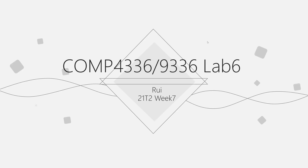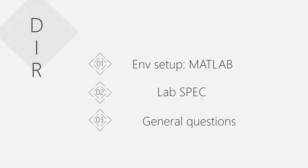Let's have a look at Lab 6. Lab 6 is a little bit different — we are going to use MATLAB. In the first step I will talk about how to do the installation for MATLAB and the Communication Toolbox that we need in the lab. In the second step, just like the previous lab, we will discuss the details about the lab, how to do it, and the general questions.